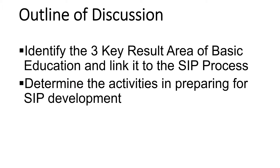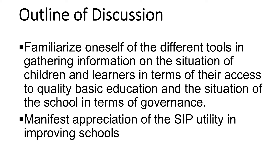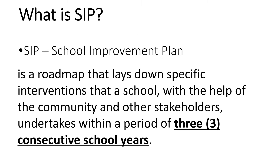Today we're going to cover the following: identify the three key result areas of basic education and link them to the SIP process; determine the activities in preparing for SIP development; become familiar with the different tools in gathering information on the situation of children and learners in terms of their access to quality basic education, and the situation of the schools in terms of governance; and manifest appreciation of the SIP's utility in improving our schools.